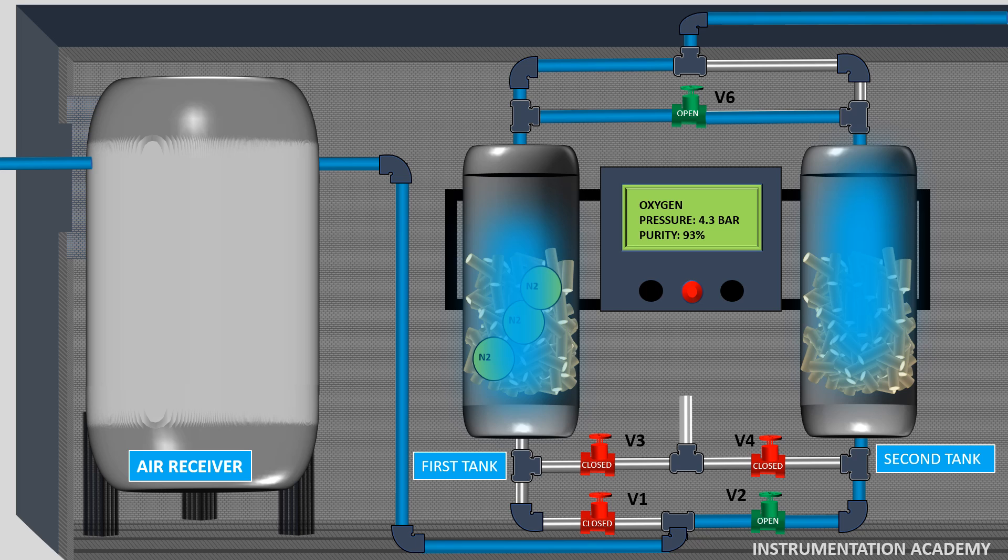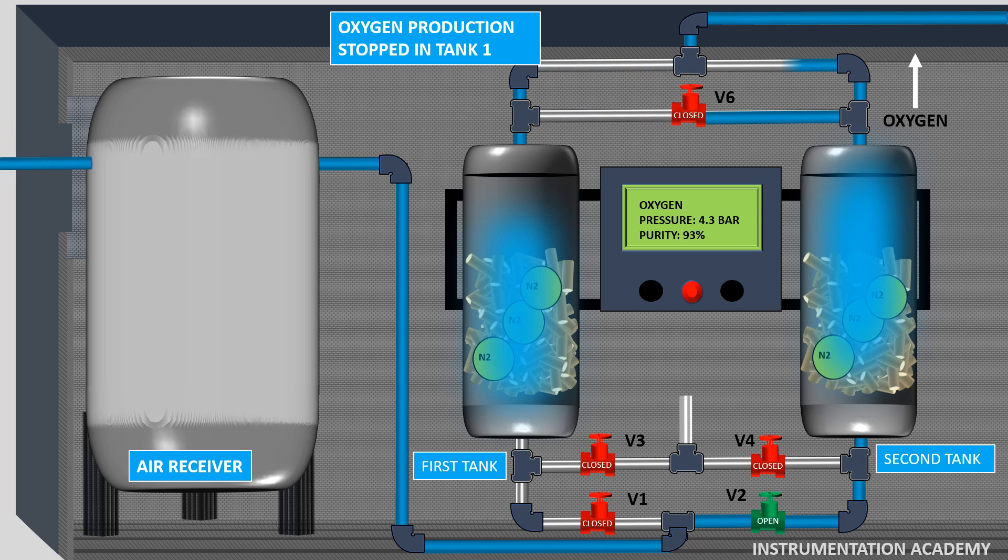Now, the second tank reaches the operating pressure and starts producing oxygen. A small portion of the generated oxygen of the second tank flows from top to bottom of the first tank which is required to push out the nitrogen that was trapped in the zeolite. As the pressure inside the first tank reduces, the zeolite loses its ability to absorb nitrogen and starts releasing the remaining nitrogen that was absorbed earlier. This released nitrogen is vented out from the system through valve V3 and the zeolite becomes regenerated.